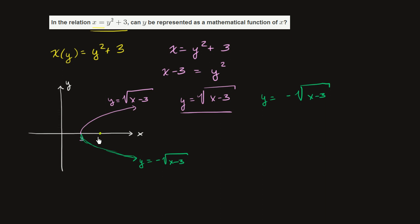So for example, let's say we take x is equal to 4. So x equals 4 could get us to y is equal to 1. 4 minus 3 is 1. Take the positive square root. It could be 1. Or you could have x equals 4 and y is equal to negative 1.